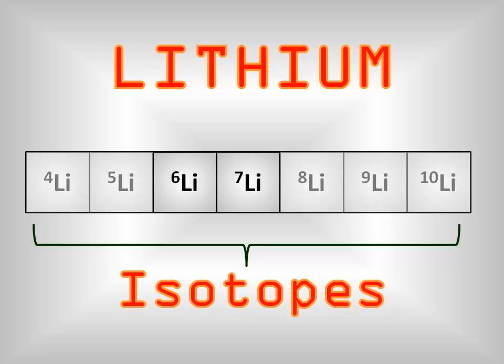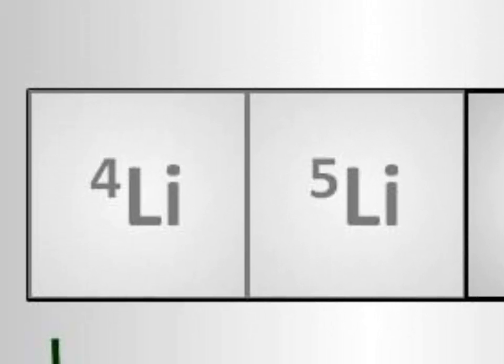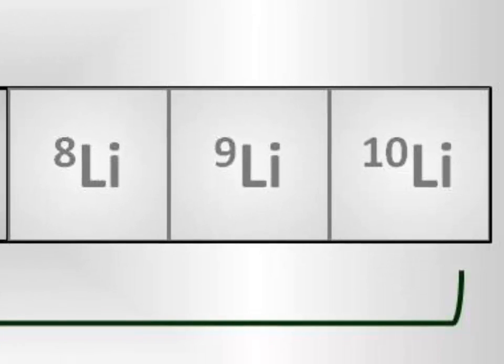Adding a few more protons and a few more neutrons, we see that lithium-6 and lithium-7 are both stable. There are also isotopes, lithium-4, 5, and lithium-8, lithium-9, and lithium-10 that are not stable.